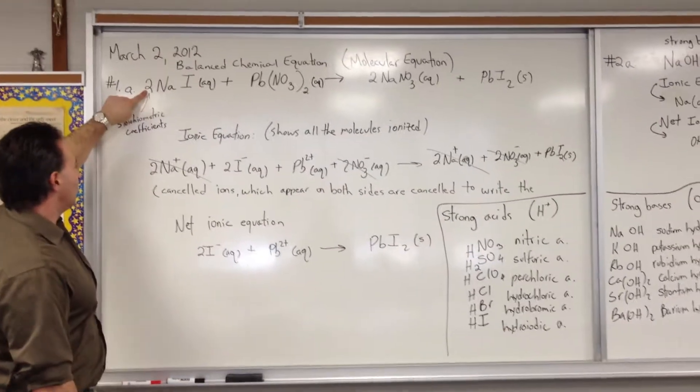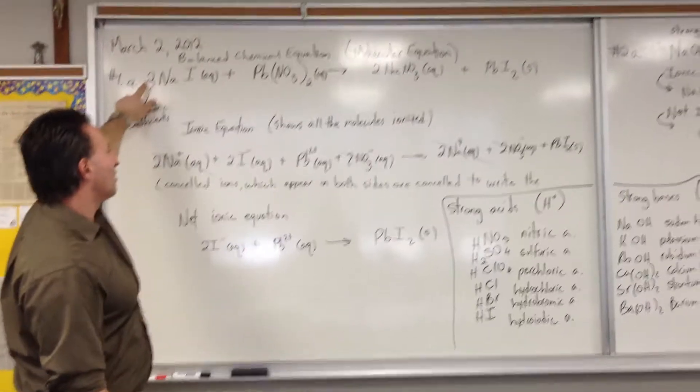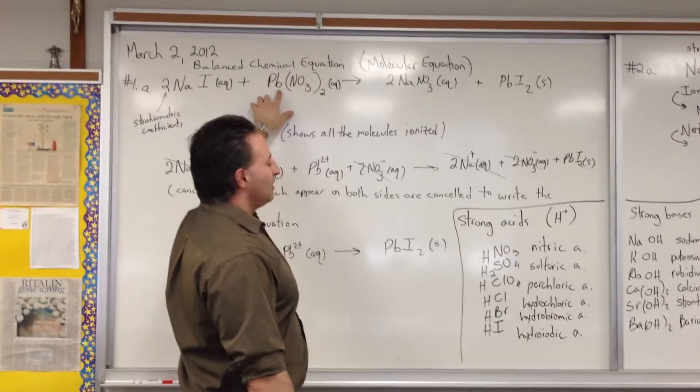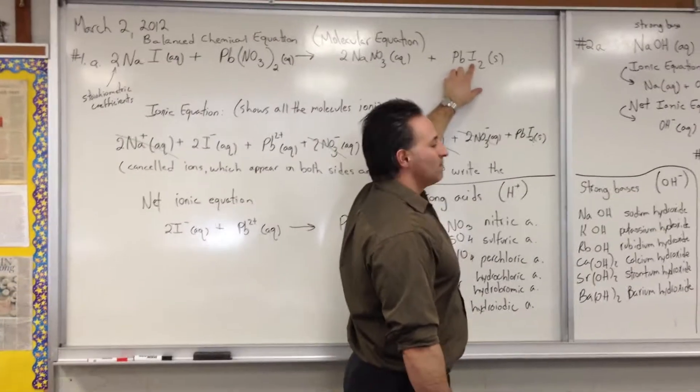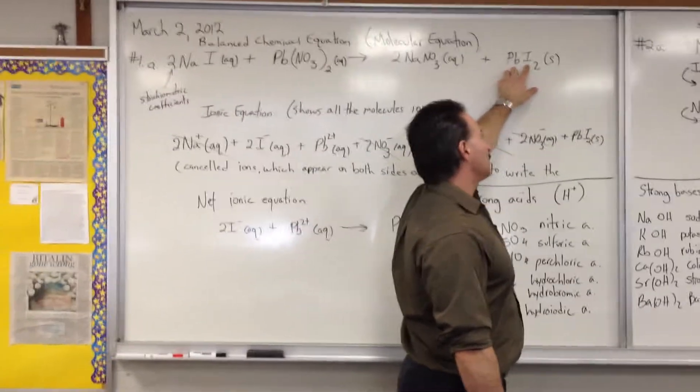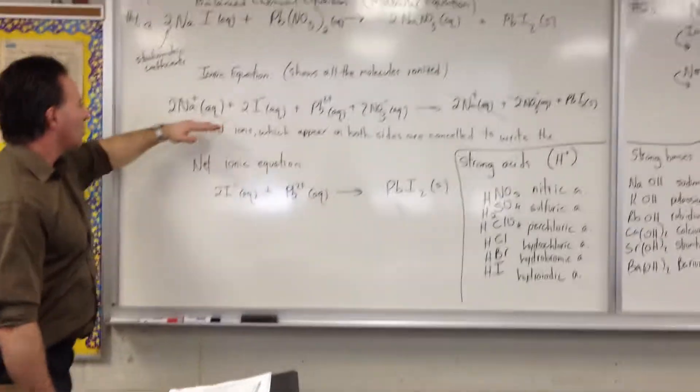And these are stoichiometric coefficients. So to balance the equation properly, you have to put a two in front of the sodium iodide, because the plumbus ion is plus two charged, so it's going to need two singly charged iodide ions to combine. Once we've balanced the equation, we can go to the next step, which will be the ionic equation.